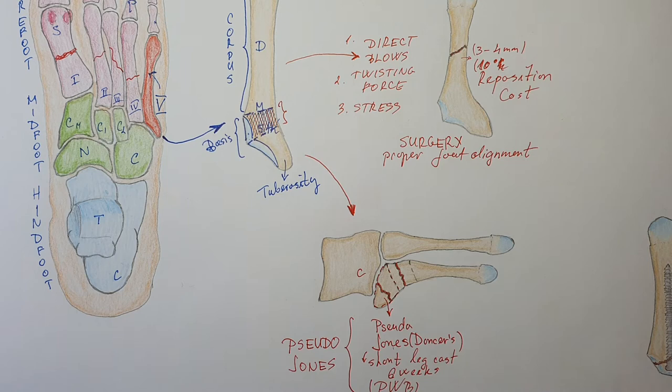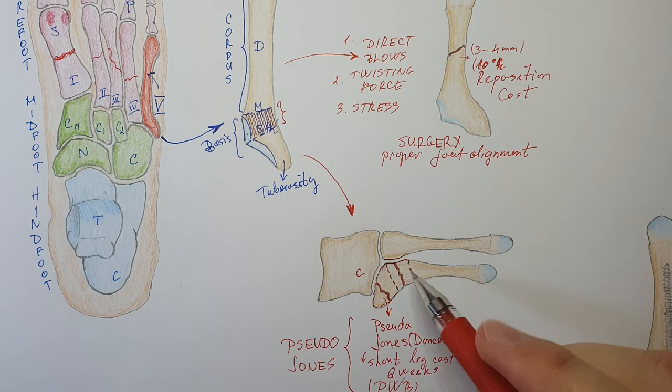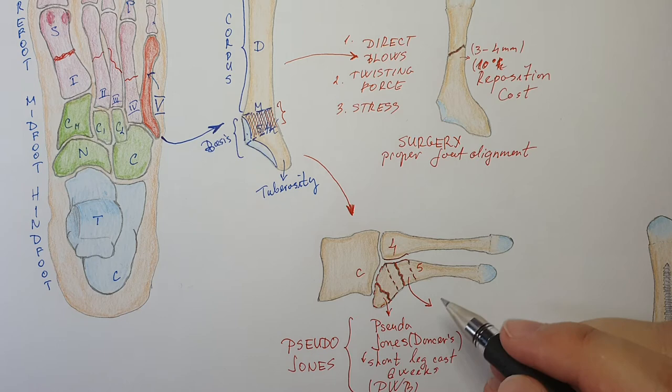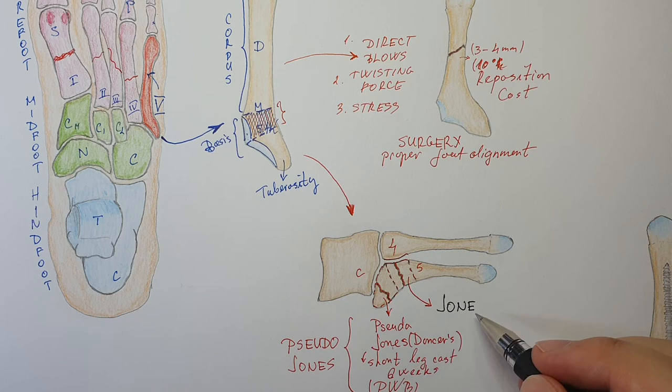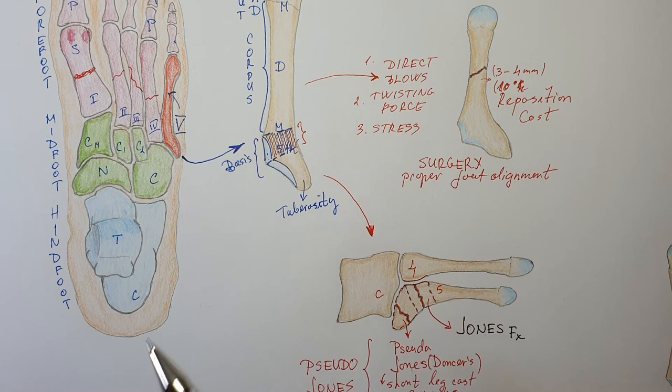The fracture that is truly important is the Jones fracture — occurring in this part of the bone where we have the articulation between the fourth and fifth metatarsal bones. The Jones fracture is very important because it is often missed. The most common injury of the foot in traumatology is an ankle sprain, happening somewhere in that region.